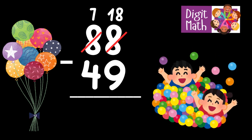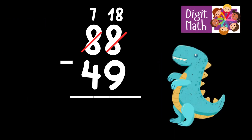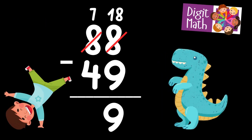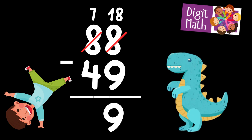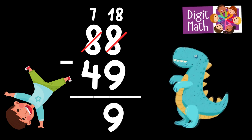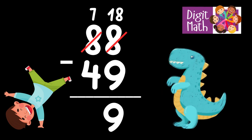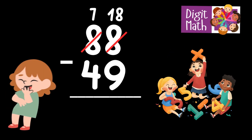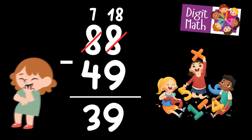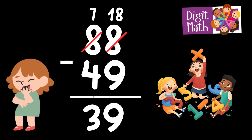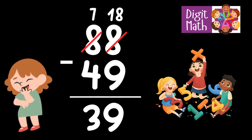Now we have 18 in the Units column. Subtract 9 from 18, which equals 9. In the Tens column, we now have 7. Subtract 4 from 7, which equals 3. So the final result is: 88 minus 49 equals 39.